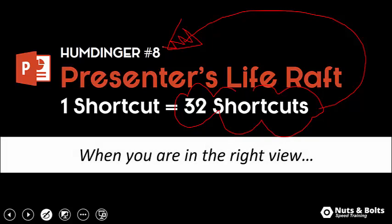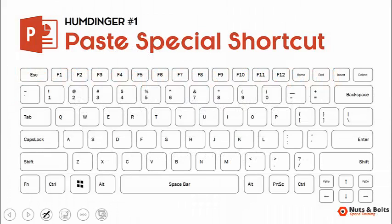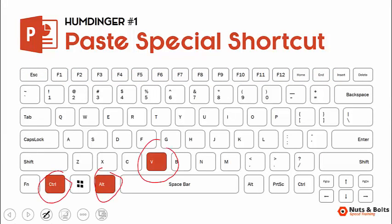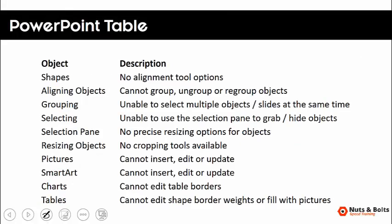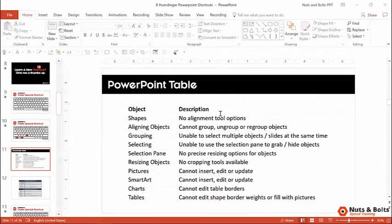All you need to do is be in the right view. Let's talk about humdinger number one: the paste special shortcut, which is Ctrl+Alt+V. This gives you a lot of picture options for your presentation, but it's also a great way to break up PowerPoint charts and PowerPoint tables. Let me show you what I mean.